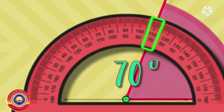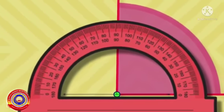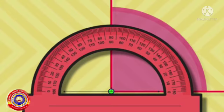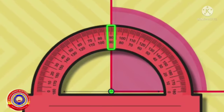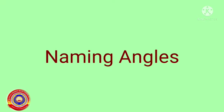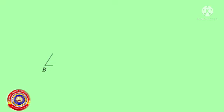Is it clear for you? Now let's measure another angle. Here the center point of the protractor is over the vertex of the angle and it is placed over the baseline of the angle. What is the measure of this angle? Here the other arm of the angle touches the 90 degree mark of the protractor. So the measure of this angle is 90 degrees. Is it clear for you?